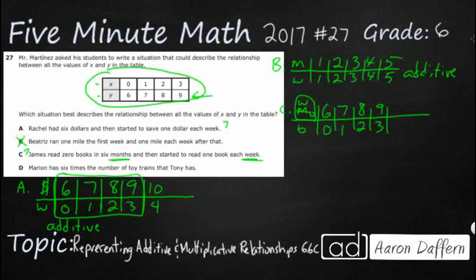So I'm not thinking that's going to be it because we don't mix the units. And then let's check D here. D, Marion has six times the number of toy trains that Tony has. So we just have Marion and Tony. And this is an additive relationship up here, in case you're wondering, up in C.